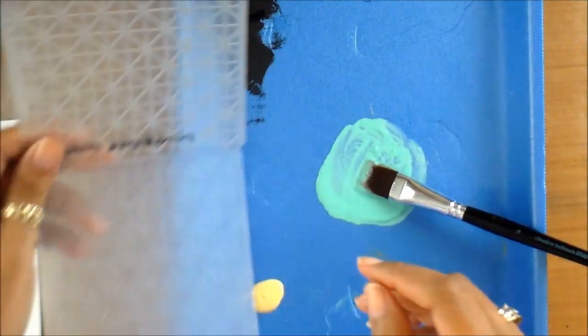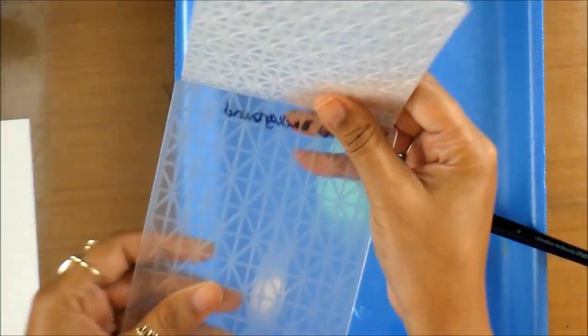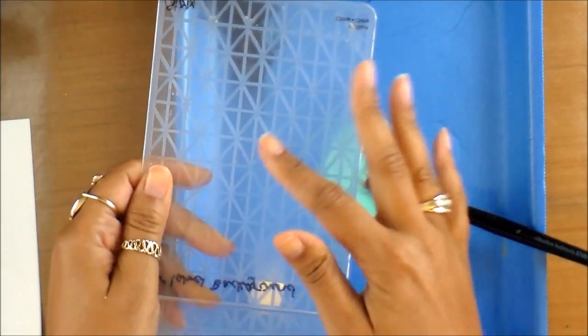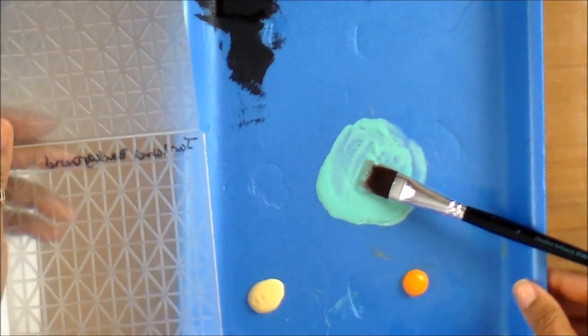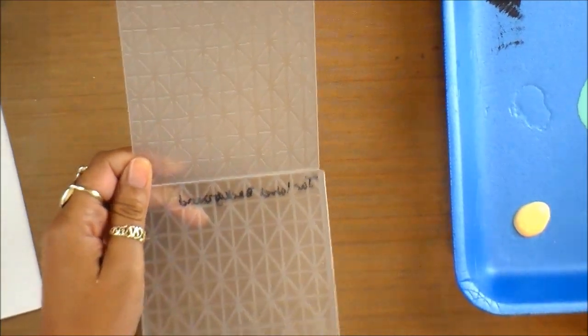As you can see, an embossing folder has two sides. You can get two different looks out of one embossing folder. You have a rough side and then an indented side. I think I'm going to use the top part of the folder. I kind of like that detail a little bit better.